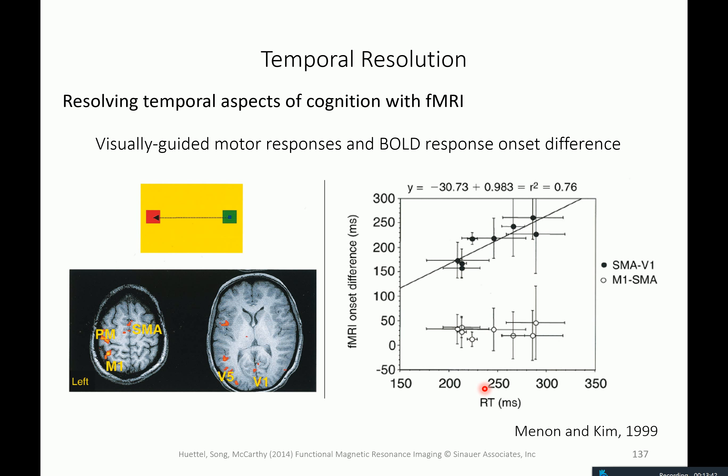This can be read out as the time difference in fMRI activity onset between SMA and V1. The transduction delay between SMA and M1 is automatized and direct — the onset is relatively constant irrespective of reaction time — about 40 milliseconds, and this does not co-vary with reaction time. The onset difference between SMA and V1 reflects the variability in reaction times at the scale that is relevant to reaction times.